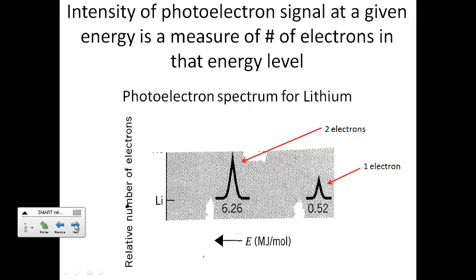The intensity, or the size of each of these peaks, tells us relatively how many electrons are in that particular energy level or that shell. So here we can see lithium, two electrons in this peak, which is twice as big as this peak that has only one electron. So if there were four electrons on another shell, you would expect to see it twice as big as this one, and then four times as big as this very small one over here.